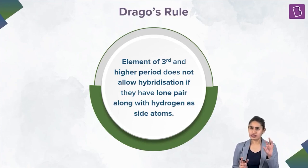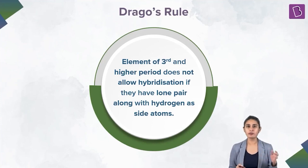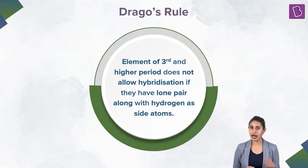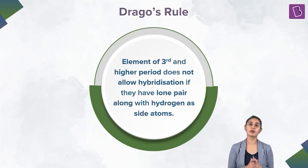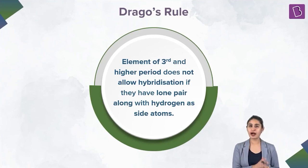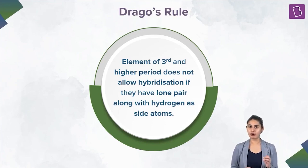The lone pair is generally present in the s orbital. If the s orbital is stereochemically inactive — that is, not participating in hybridization — then only the p orbitals are participating in hybridization. If only p orbitals participate, the percentage s character is 0. Indeed, you will observe that the percentage s character in Drago compounds is 0.